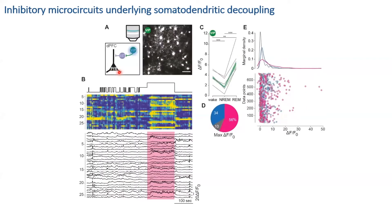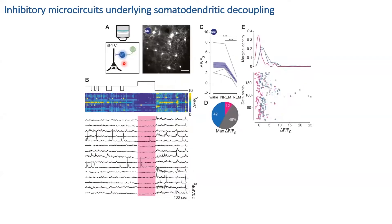Using the same strategy for other interneuron subpopulations: VIP interneurons similarly increase their activity during REM sleep, with more than half of detected neurons showing maximal activity during REM. As a consequence, since VIP interneurons synapse onto somatostatin neurons, we recorded somatostatin and found that on the contrary, somatostatin neurons become almost completely silent during REM.